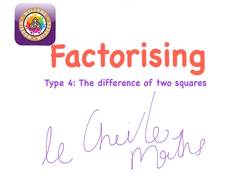Okay, so today's lesson is on factorizing, and it's type four: the difference of two squares. Now the word difference you've met before. If I said what is the difference between seven and five, the answer would be two. So the word difference in this sense is talking about subtraction.